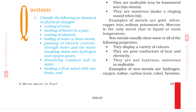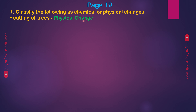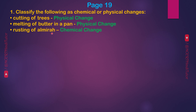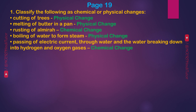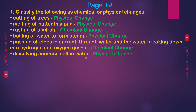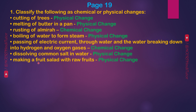Page 19, Question 1: Classify the following as chemical or physical changes. Answer: 1st — Cutting of trees: physical change. 2nd — Melting of butter in a pan: physical change. 3rd — Rusting of almirah: chemical change. 4th — Boiling of water to form steam: physical change. 5th — Passing of electric current through water breaking down into hydrogen and oxygen gases: chemical change. 6th — Dissolving common salt in water: physical change. Making a fruit salad with raw fruits: physical change.